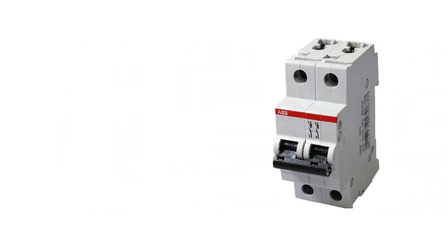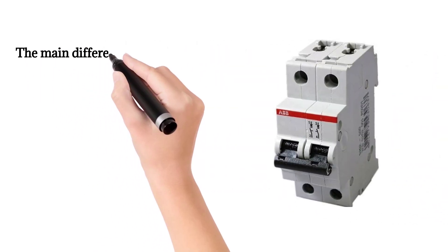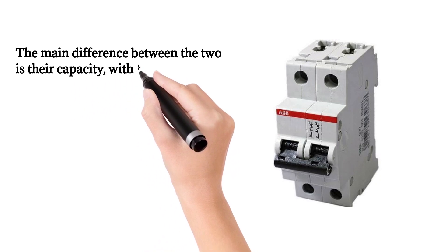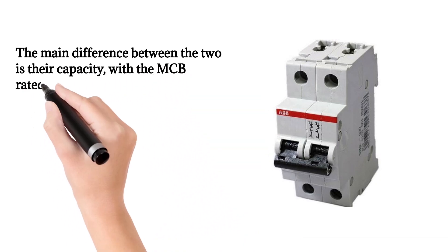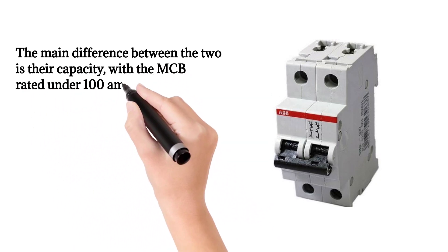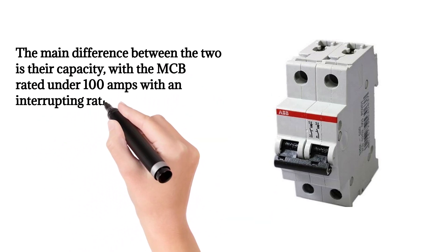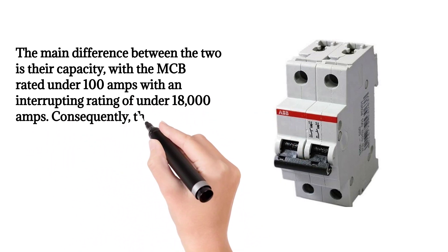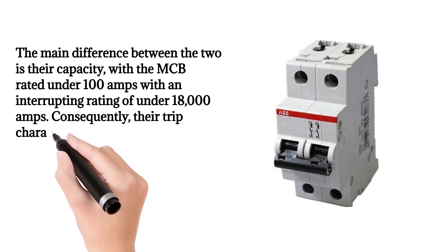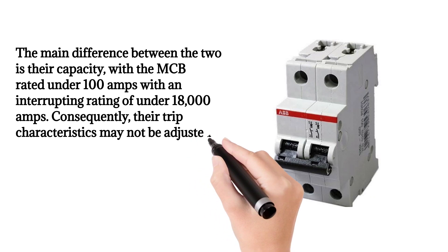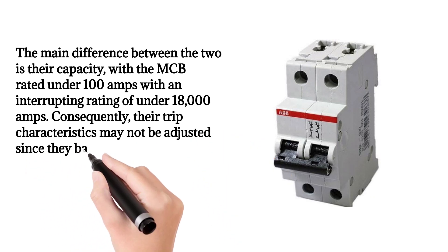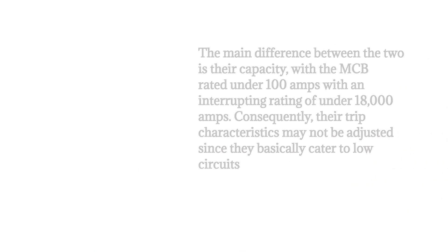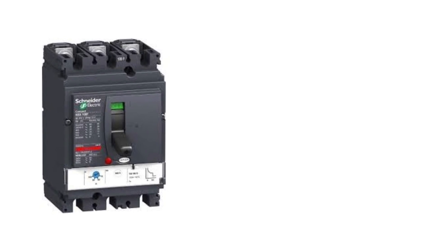The main difference between the two is their capacity, with the MCB rated under 100 amps with an interrupting rating of under 18,000 amps. Consequently, their trip characteristics may not be adjusted since they basically cater to low circuits.